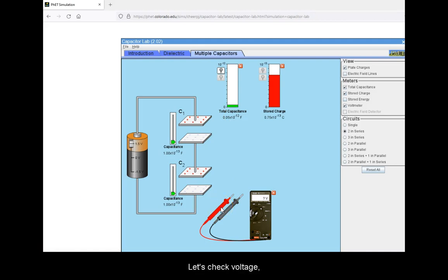Let's check voltage first across the entire circuit, which should equal that given by our source of electromotive force. Note that the voltage across each capacitor is less than this. These, however, must still add up to the total voltage of the circuit.